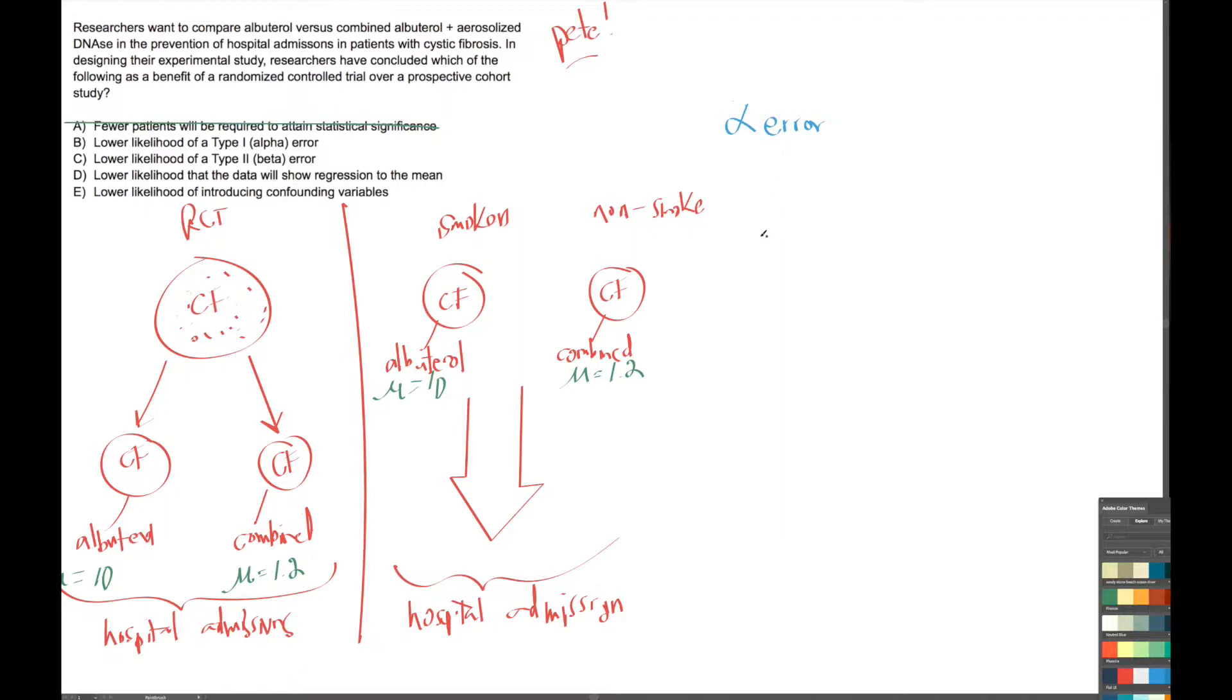Alpha error is the error that most scientists make. An alpha error is what an alpha scientist would do—the alpha male or alpha female scientist. What an ambitious scientist wants to say is that there's a difference.